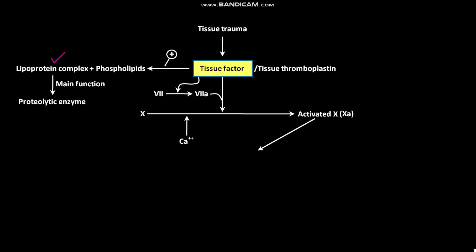In the next step, the activated factor X combines immediately with tissue phospholipids of tissue factor, or with additional phospholipids released from platelets, as well as with factor V, to form the complex called prothrombin activator. This biochemical reaction also occurs in the presence of calcium ions.